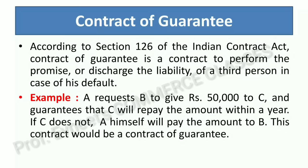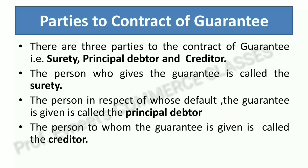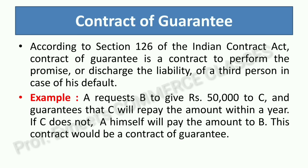In this contract of guarantee, A has received a guarantee from C. The next topic is parties to the contract of guarantee. There are three parties: first is Surety, second is Principal Debtor, and third is Creditor. The person who gives the guarantee is called the Surety. The person on whose default the guarantee is given is called the Principal Debtor. The person to whom the guarantee is given is called the Creditor. In the example: A gave the guarantee, C is the Principal Debtor, and B is the Creditor.